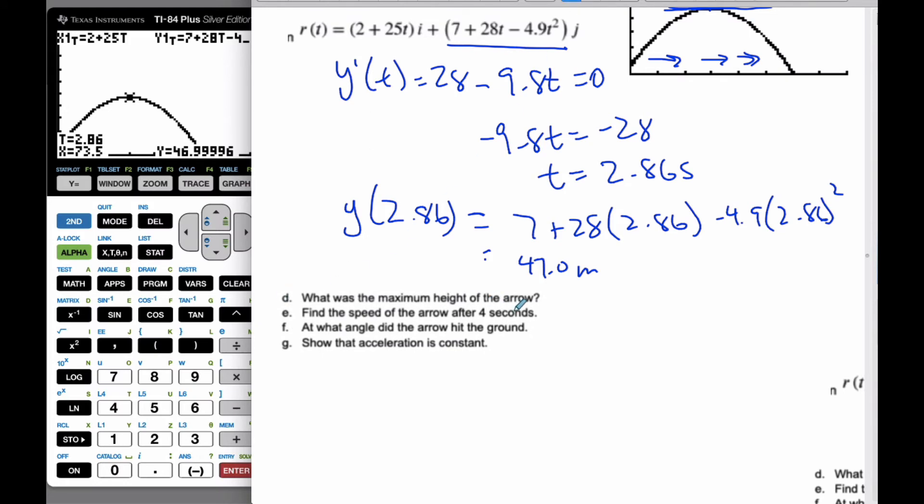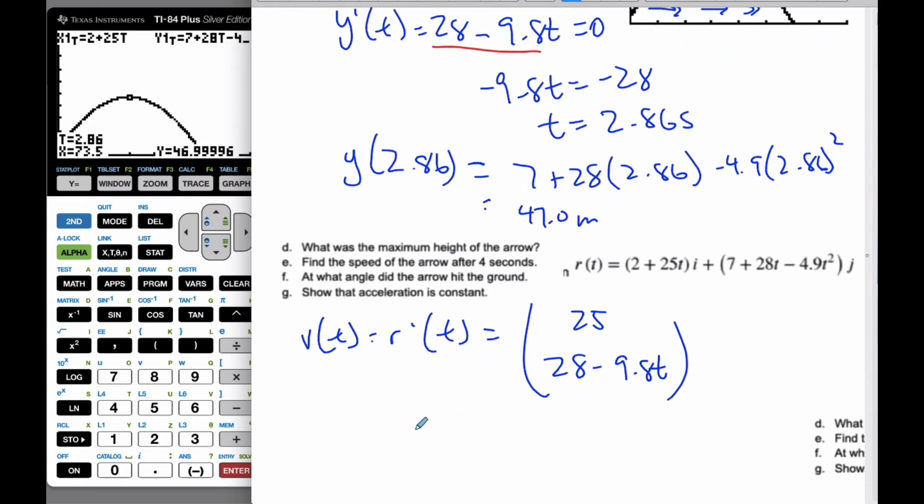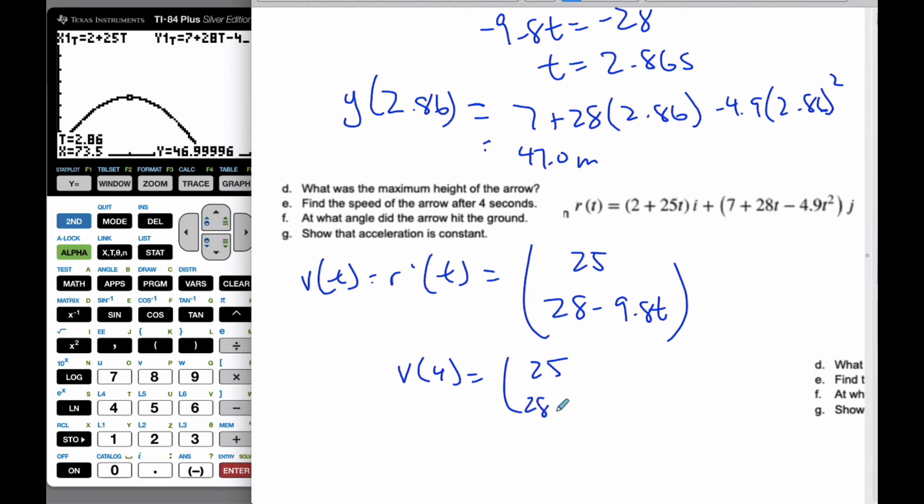Now I want to find the speed of the arrow at 4 seconds. In order to find the speed, I need to find the velocity, which equals the derivative of the position. Here was the derivative of the y value already, this one here is my derivative: 28 - 9.8t. My x value, if I take the derivative, I can see that it is 25. I'm looking for the speed of the arrow at 4 seconds. The velocity at 4 is 25 and 28 - 9.8(4) = -11.2.